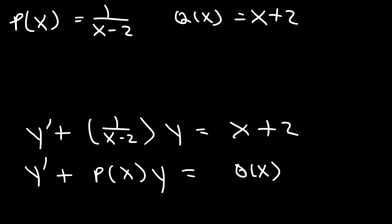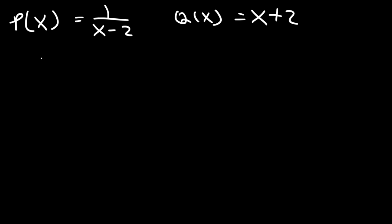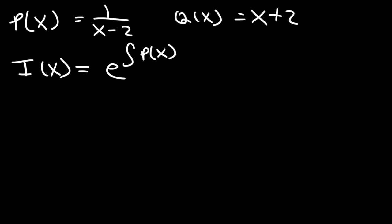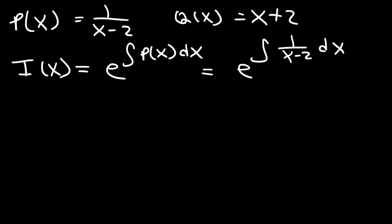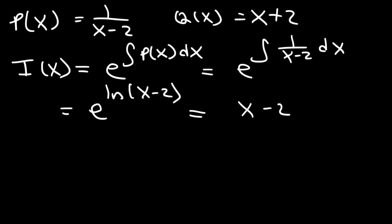Now let's determine the integrating factor. It's e raised to the integral of 1 over (x minus 2) dx. The antiderivative of 1 over (x minus 2) is the natural log of (x minus 2). So e raised to the ln of (x minus 2) simplifies to just x minus 2. That is the integrating factor.